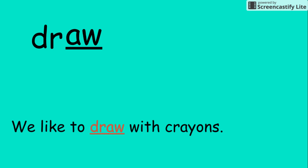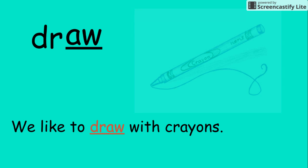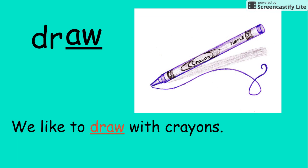D, R, AW — draw. We like to draw with crayons. Draw. Notice that the AW is saying AW — draw.